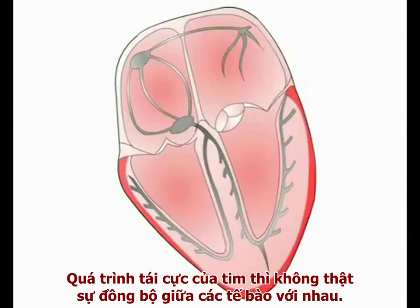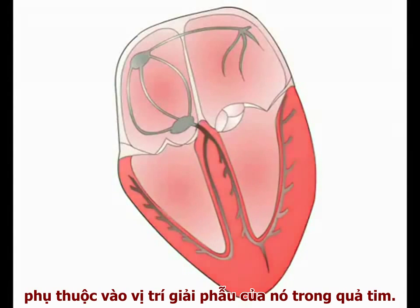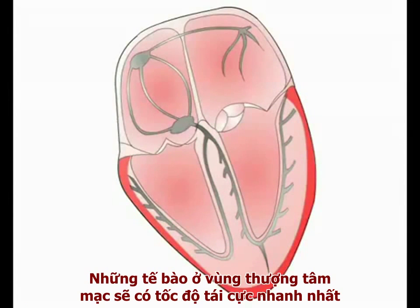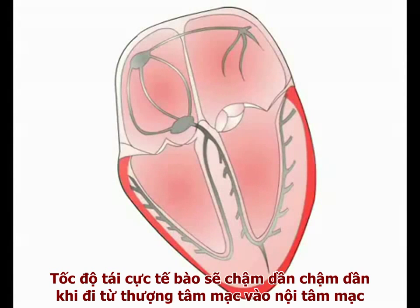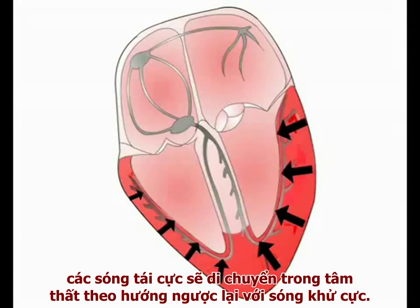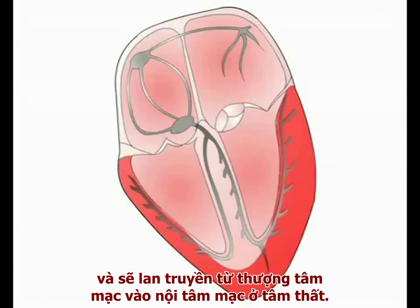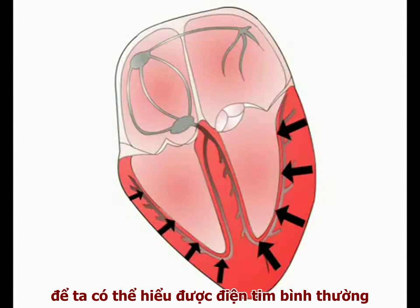Cardiac repolarization is not truly propagated between cells. However, cardiac myocytes repolarize at different rates depending on their anatomical location within the heart. Within the ventricular wall, there is a gradient in the rate of cellular repolarization. Cells in the epicardial region have the fastest rate of repolarization and repolarize first following ventricular contraction. The rate of cellular repolarization is then progressively slower as we move from the epicardium towards the endocardium. Therefore, perhaps counterintuitively, repolarization spreads through the ventricles in the opposite direction to the depolarization wave. As illustrated here, repolarization begins in the epicardium and then spreads backwards from the epicardial to the endocardial surface of the ventricles. We'll see later that this retrograde spread of ventricular repolarization is important in understanding the normal ECG readout.